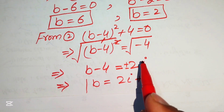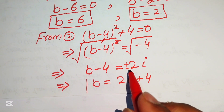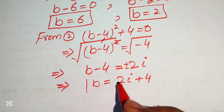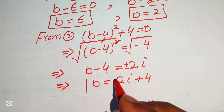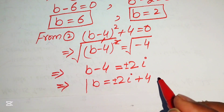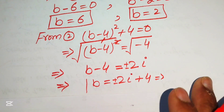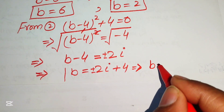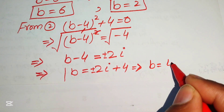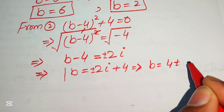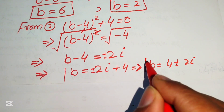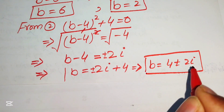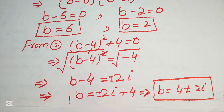We place the plus or minus sign because we take the square root on both sides. Moving the minus 4 to the right hand side, the second values of b are 4 plus or minus 2 iota. These are the two complex roots from equation 2.